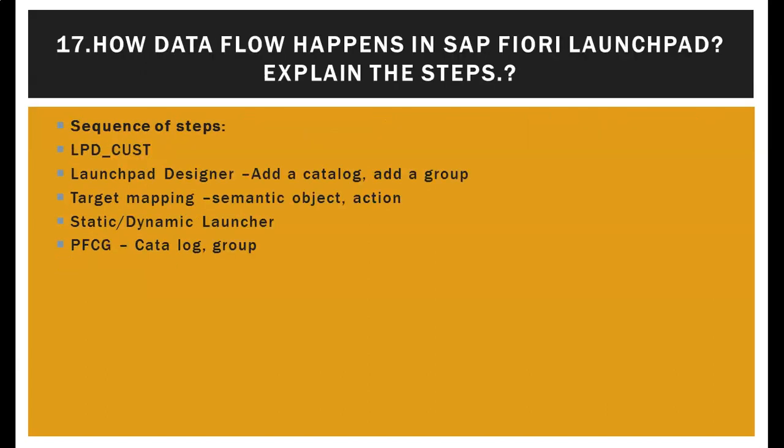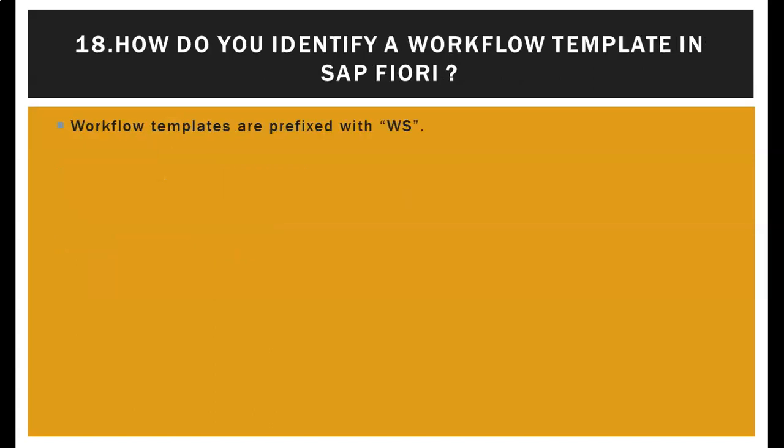How does data flow happen in the SAP Fiori Launchpad? The sequence of steps in data flow are: LPD_CUST (Launchpad design), add a catalog and a group, target mapping, semantic object to action, static/dynamic launcher, and PFCG where we have the catalog and group.